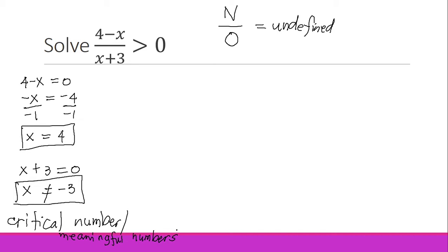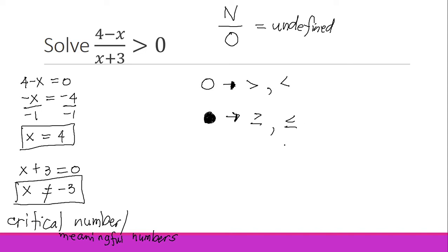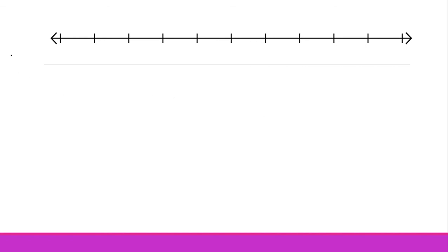After that, we plot the critical numbers on a number line. When plotting values, you may use a hollow dot — this applies when your inequality sign is greater than or less than. For a closed interval, you use a shaded dot, which is used when you have greater than or equal to, or less than or equal to. Our critical values are 4 and negative 3.